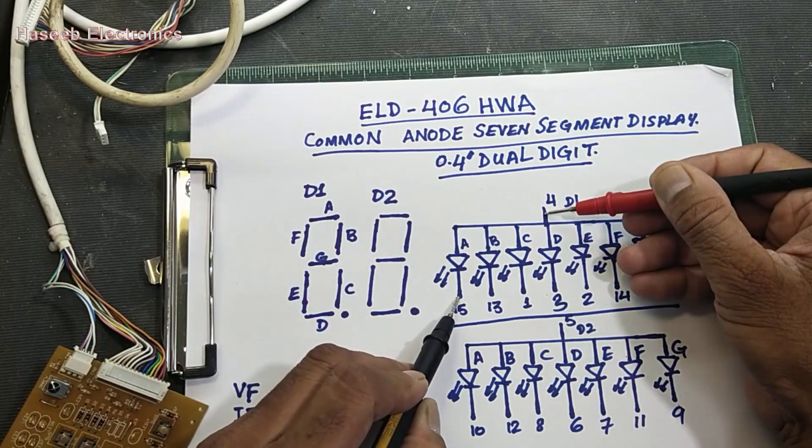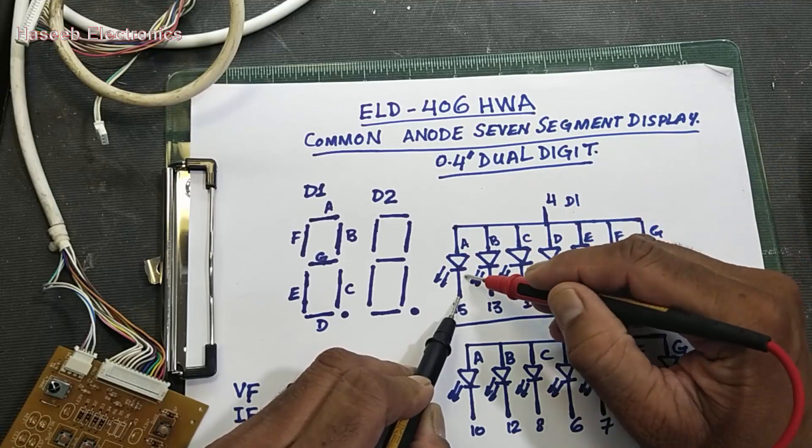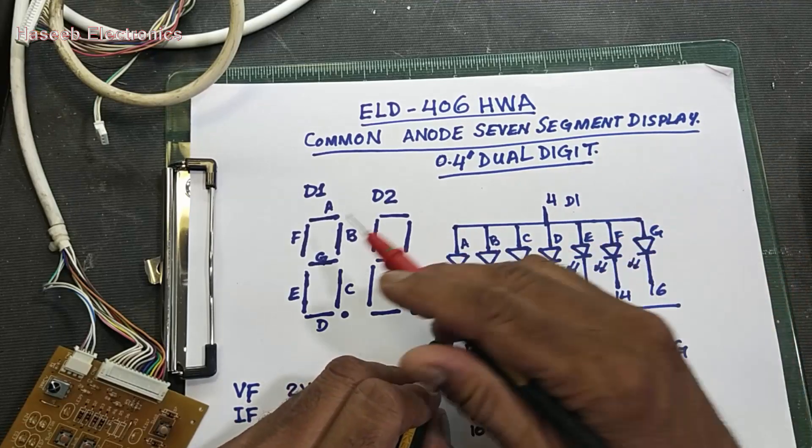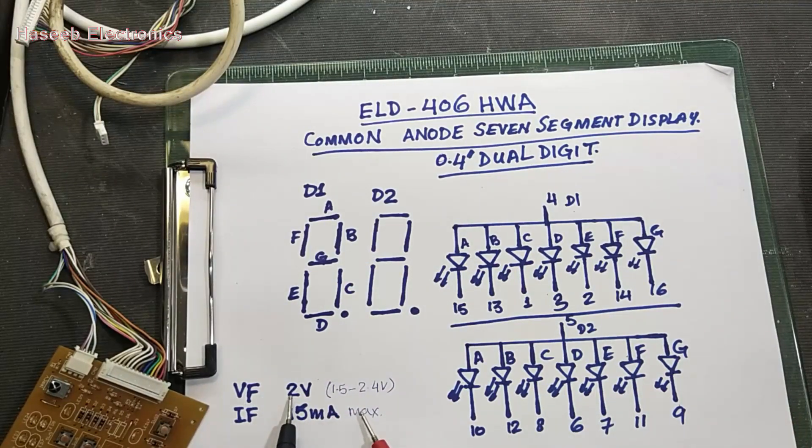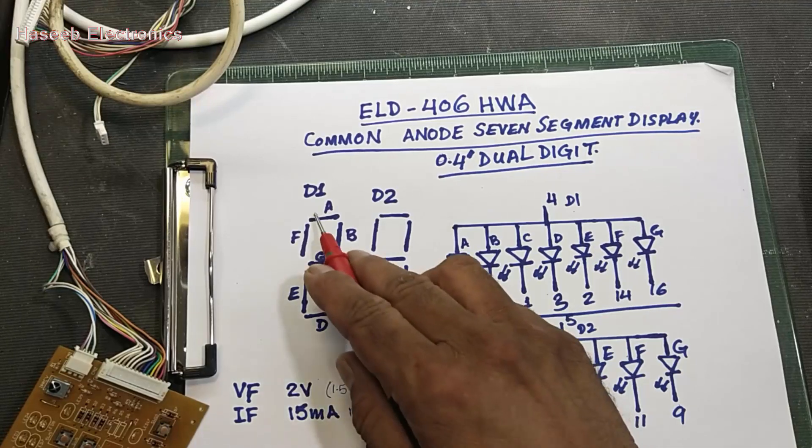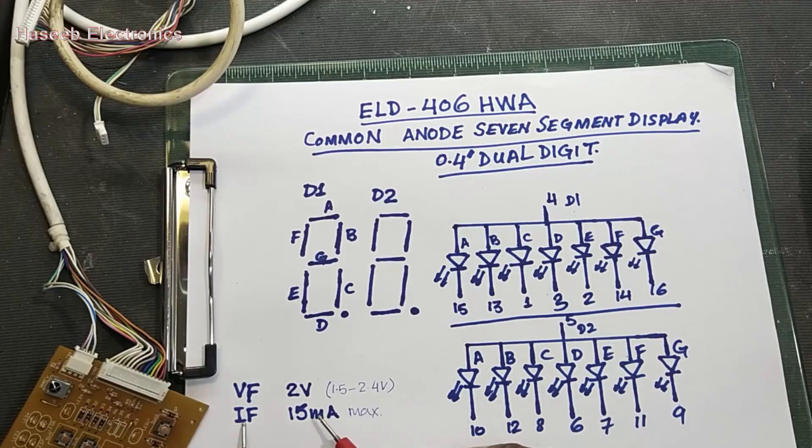Every LED has forward voltage of 2 volts typical, and 1.5 to 2.4 volts it will display. And the forward current maximum is 15 milliampere. Connect red lead at pin number 4.